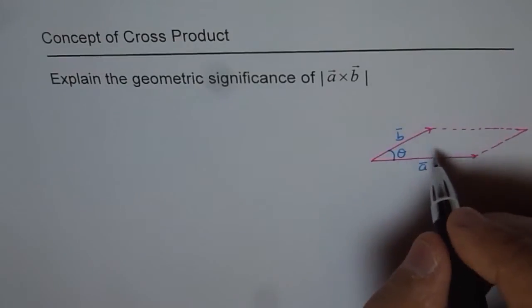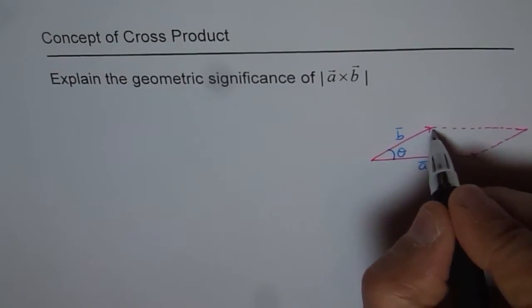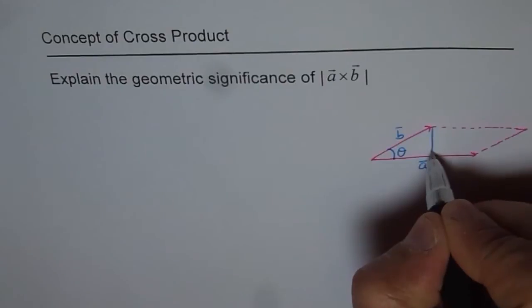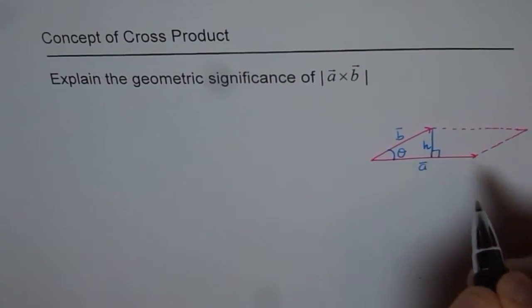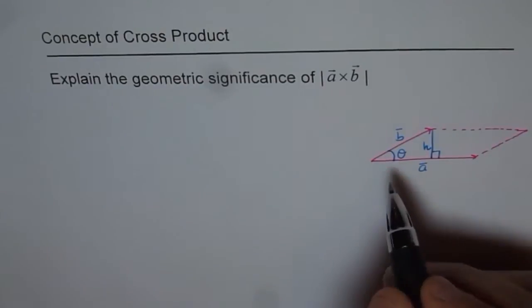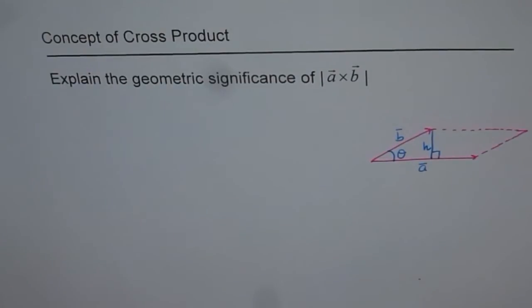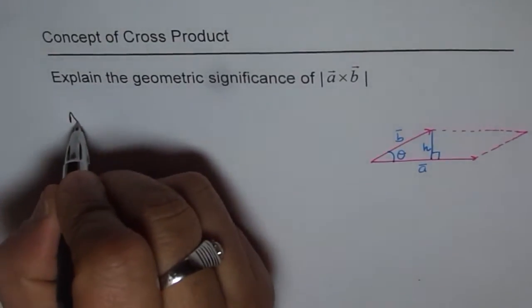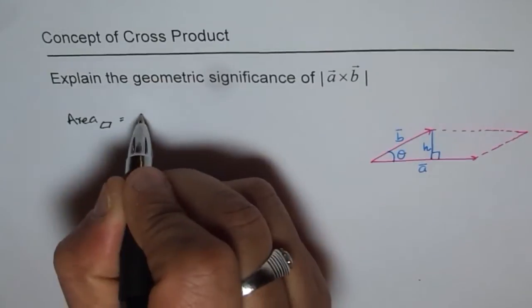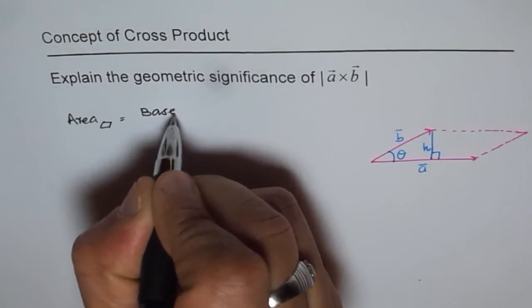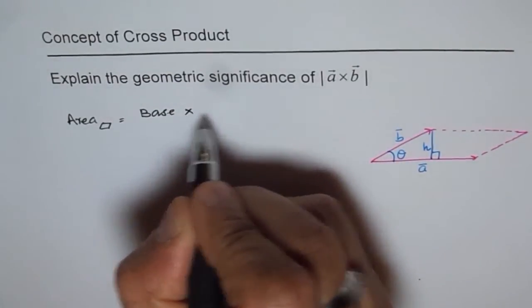Now, what is the area of parallelogram? To find the area of parallelogram, we actually draw a perpendicular. And let us say the height is H. Then the area of parallelogram is given as base times height. So area of parallelogram is equal to base times height.